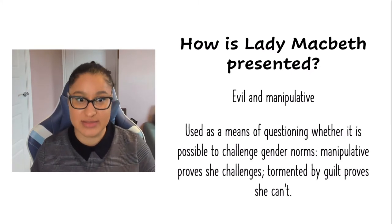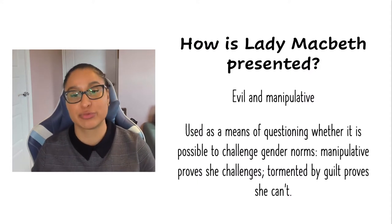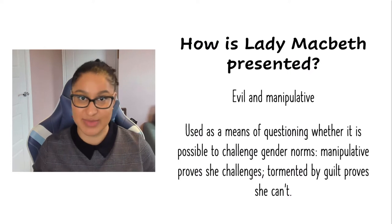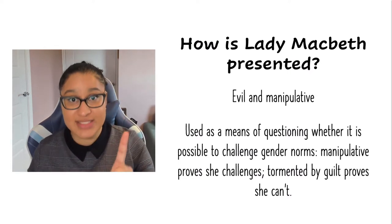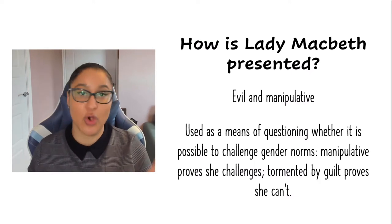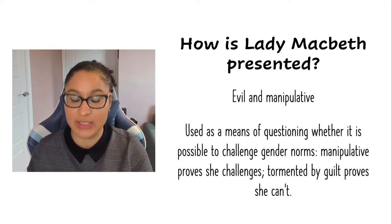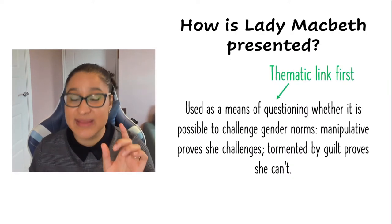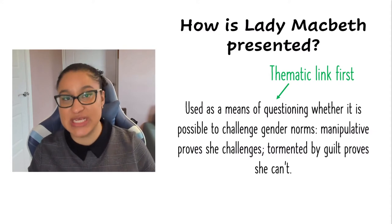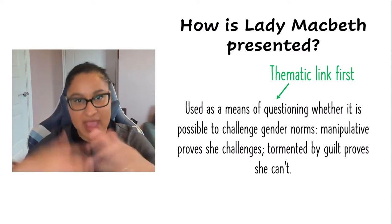On the other hand, a more perceptive idea would look more like this: she's used as a means of questioning whether it is possible to challenge gender norms — manipulative proves she challenges; tormented by guilt proves she can't. A lot of students would say the second one uses more words and sounds fancy, so it must be the high-mark one. But more words does not equal more marks. What does equal a grade nine is having a clear thematic link — focusing on how the character is being used as a tool by Shakespeare to explore a particular theme and convey a particular message.